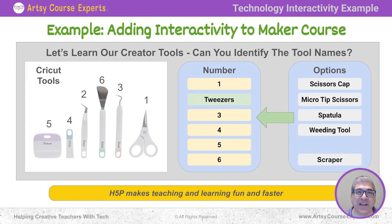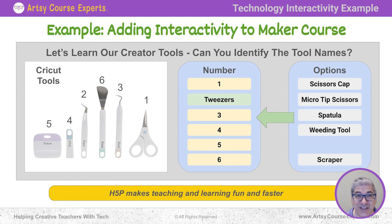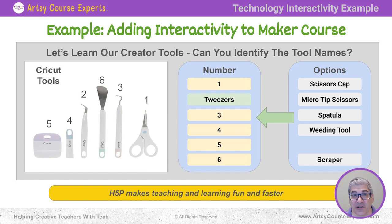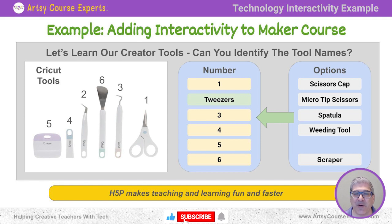In this example, we're going to add interactivity to a maker course — let's say a maker course about Cricut. My wife loves her Cricut, always making cool stuff at home. Let's say you have a course teaching Cricut and there are these tools. This happens in a lot of industries where students at intermediate levels need to learn their toolbox or that creative trade. Maybe we went over a lesson covering each of the tools, and at the end we check if they know the names.